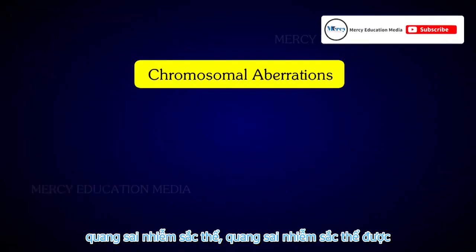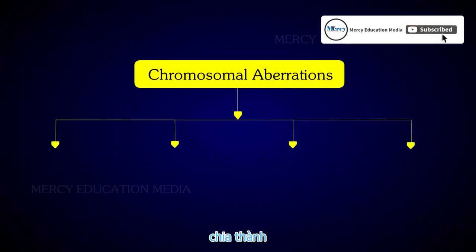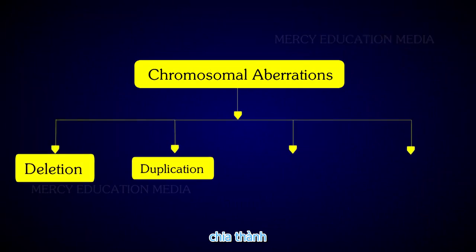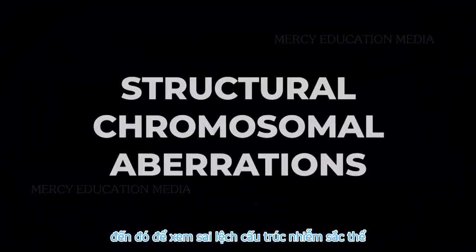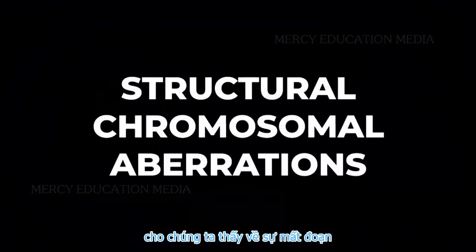The chromosomal aberration is divided into deletion, duplication, inversion and transversion. Let us see the structural chromosomal aberrations.